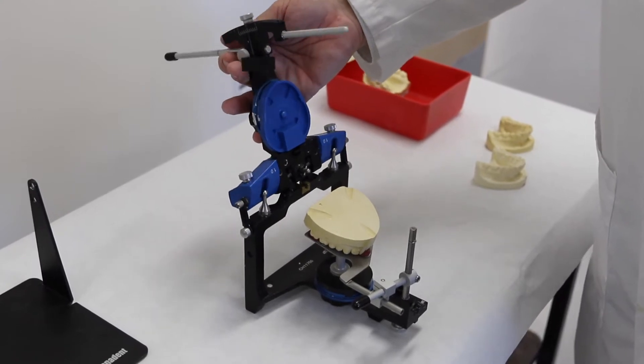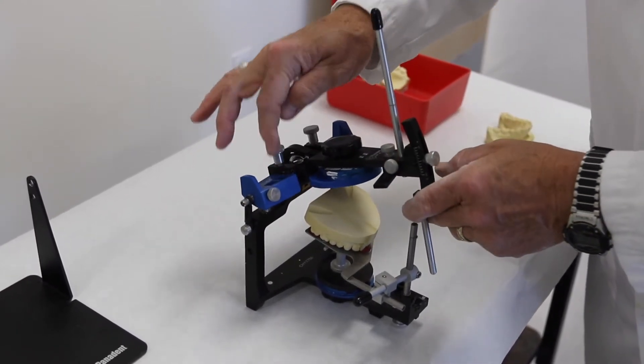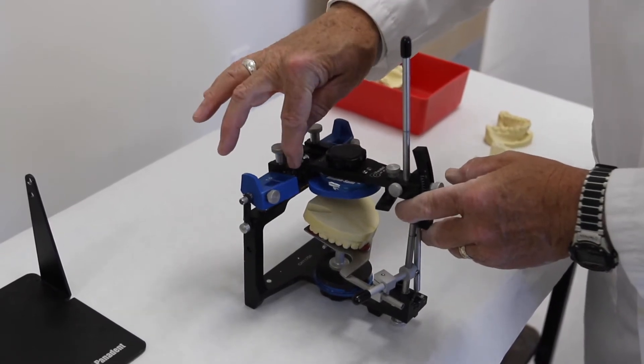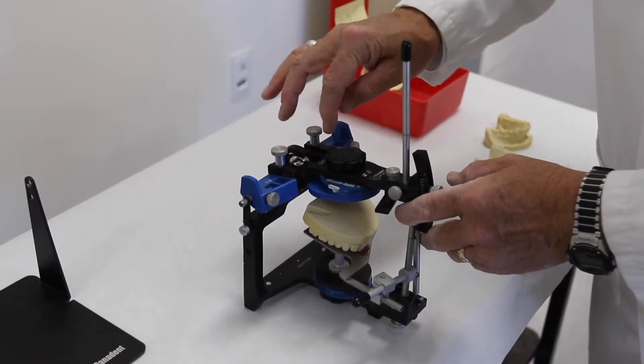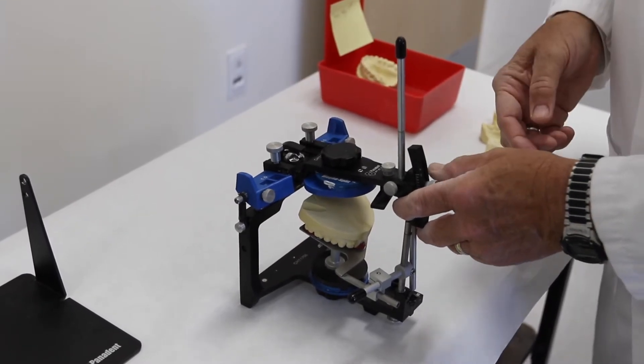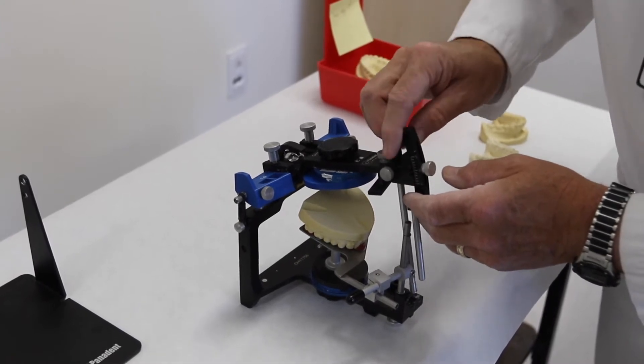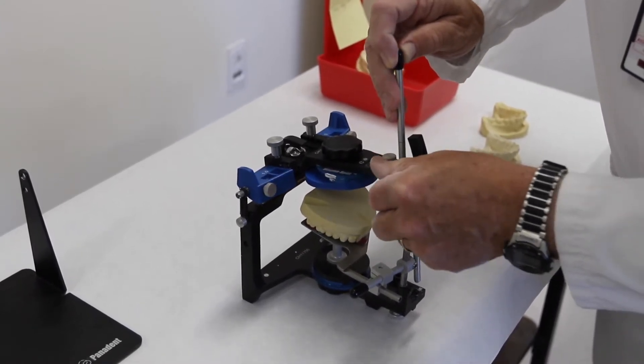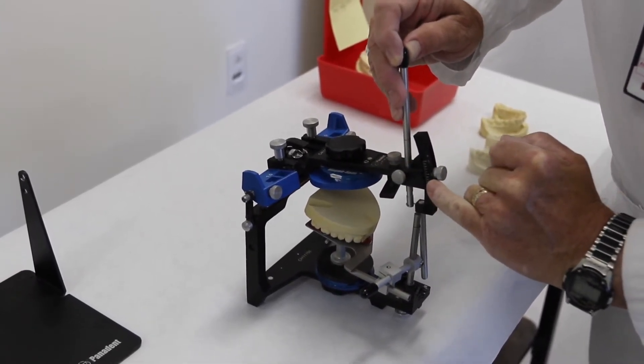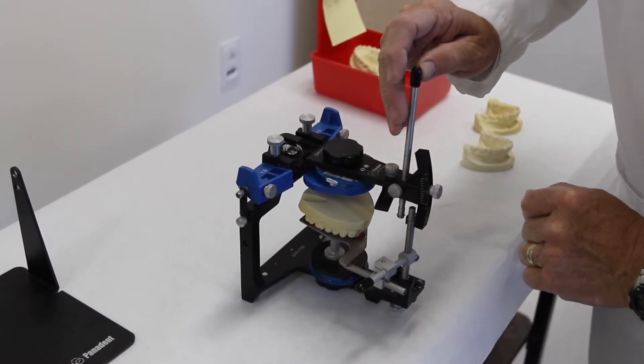The next thing I do is check to see that the analogs are set at four and the indexes are on the sides of the upper member of the articulator. I also check to see that the incisal pin is set at zero, and you can see that when it seats down.